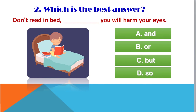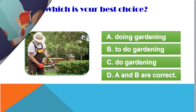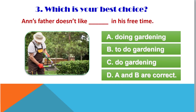Question 2: don't read in bed or you will hurt your eyes. A: and, B: or, C: but, D: so — the correct answer is B: or. Question 3: my father doesn't like ___ in his free time. A: doing gardening, B: to do gardening, C: do gardening, D: A and B are all correct. The answer is D — A and B are all correct. Remember, after the verb 'like' we can use 'to + verb' or 'verb + ing,' so both A and B are correct.